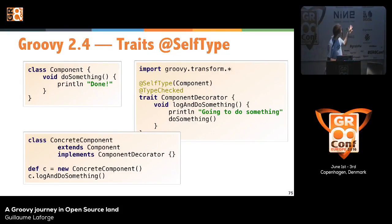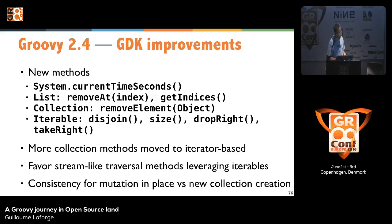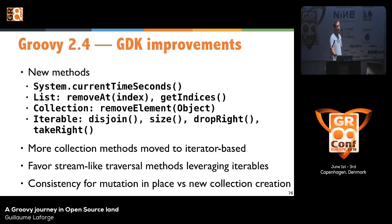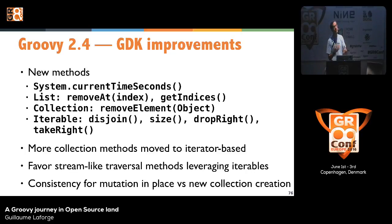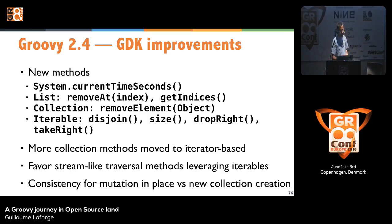Some new improvements in the GDK: new methods including current time in seconds, new things with indices for lists, and more. Historically GDK methods working with collections always returned new collections, but we're increasingly moving towards using iterators or iterables instead, so you can stream data pretty much like the stream API, without creating intermediary collections at each step. It's a memory optimization but behaves the same way.